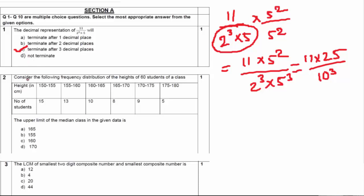Moving to question number two: consider the following frequency distribution of the height of 60 students. Heights range from 150 to 180 centimeters, and the number of students are 15, 13, 10, 8, 9, and 5 respectively. Find the upper limit of the median class.